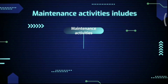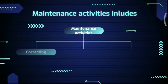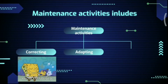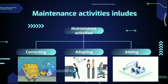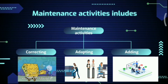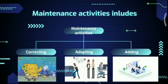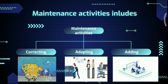Maintenance activities include correcting problems, adapting a product to new processing environments, and adding enhancements to a software product. The distribution of maintenance activities is 20% for error correction, 20% for adaptation, and 60% for enhancements.